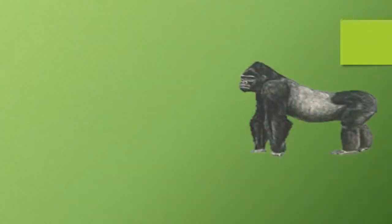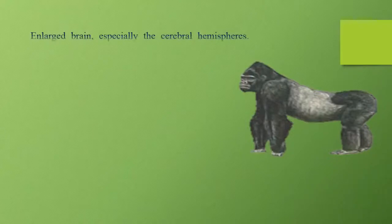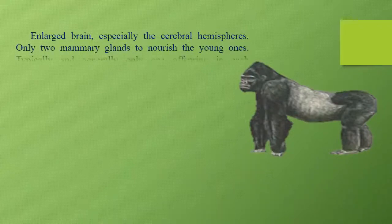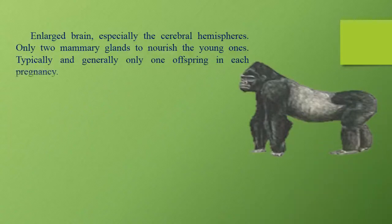Shared characteristics include an enlarged brain, especially the cerebral hemisphere, only two mammary glands to nourish the young ones, and typically only one offspring in each pregnancy.